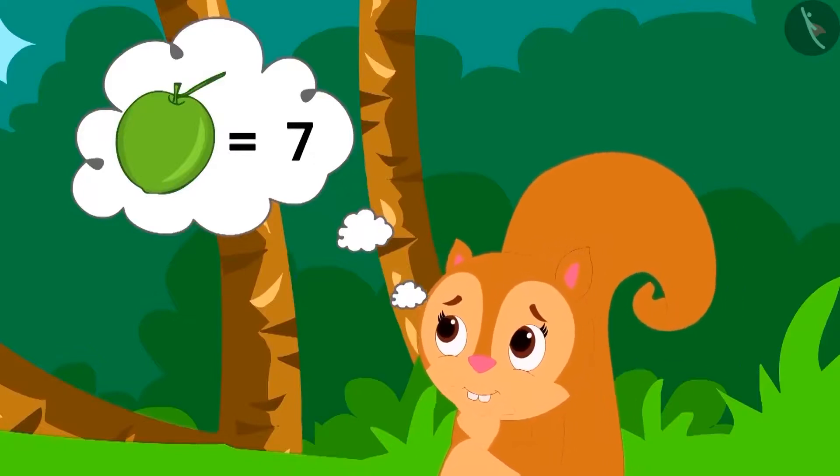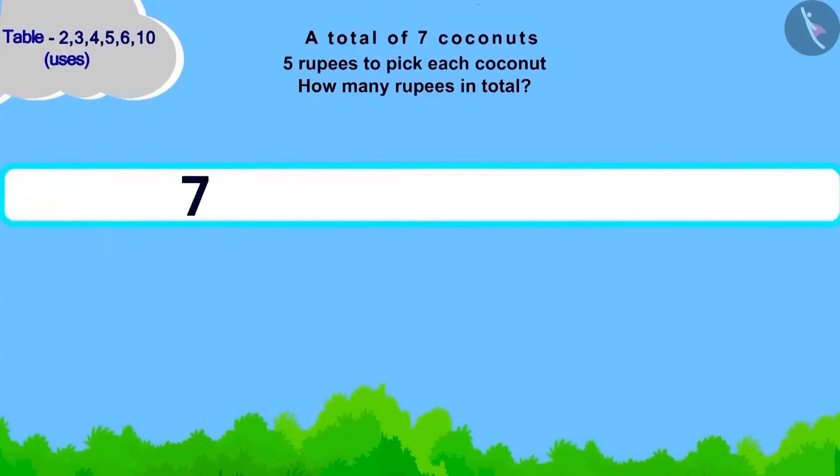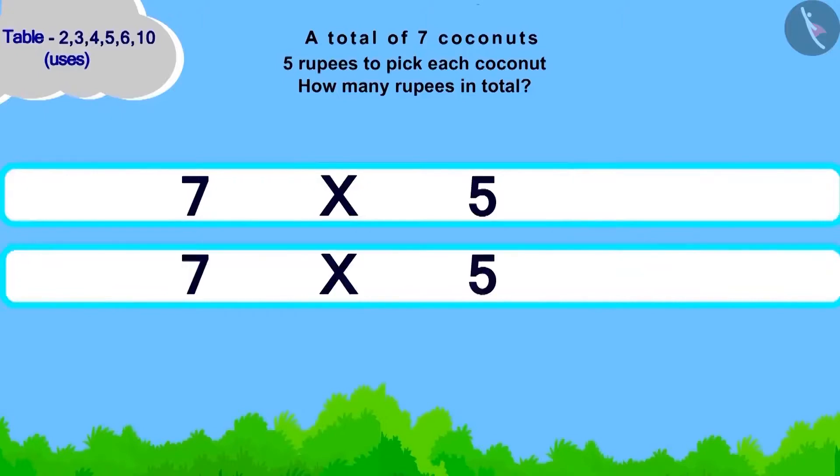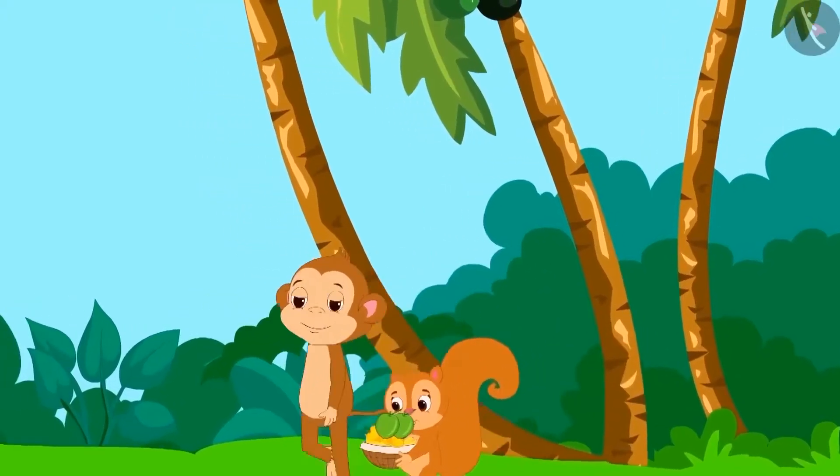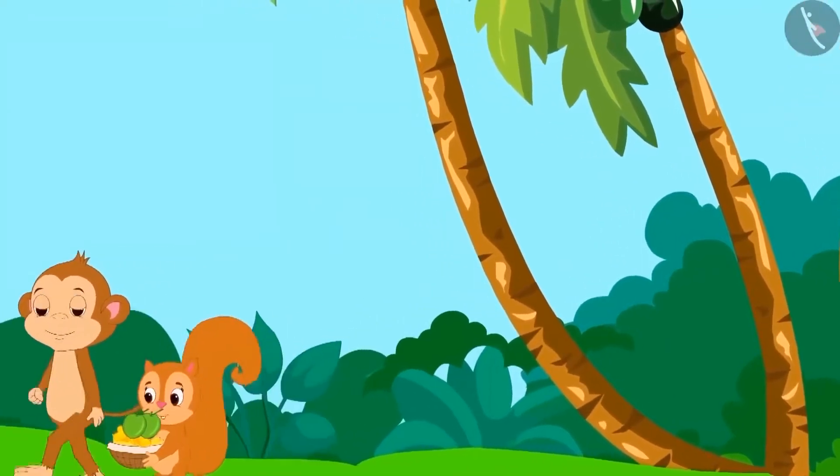Now, Chanda is thinking how much money will she have to pay to Babban? Children, you have solved this correctly. Chanda will have to give 35 rupees to Babban. Chanda collected the coconuts and gave money to Babban.